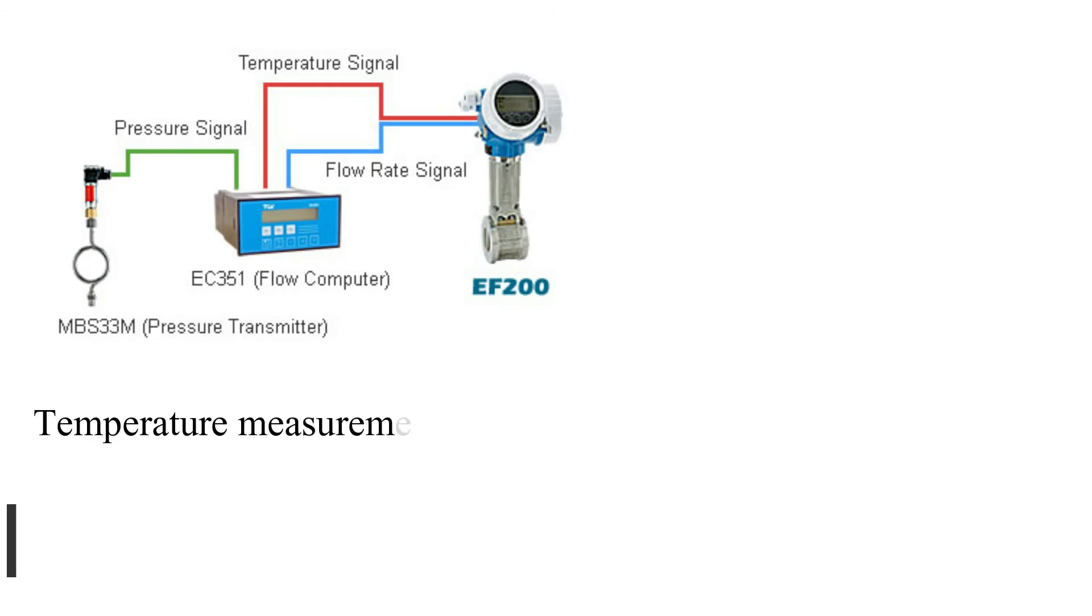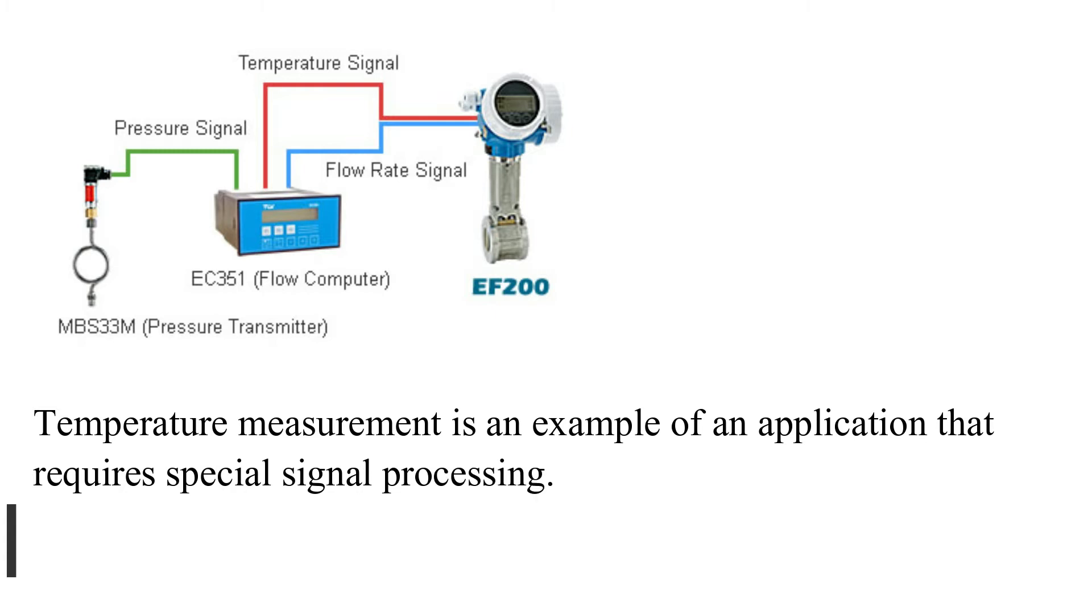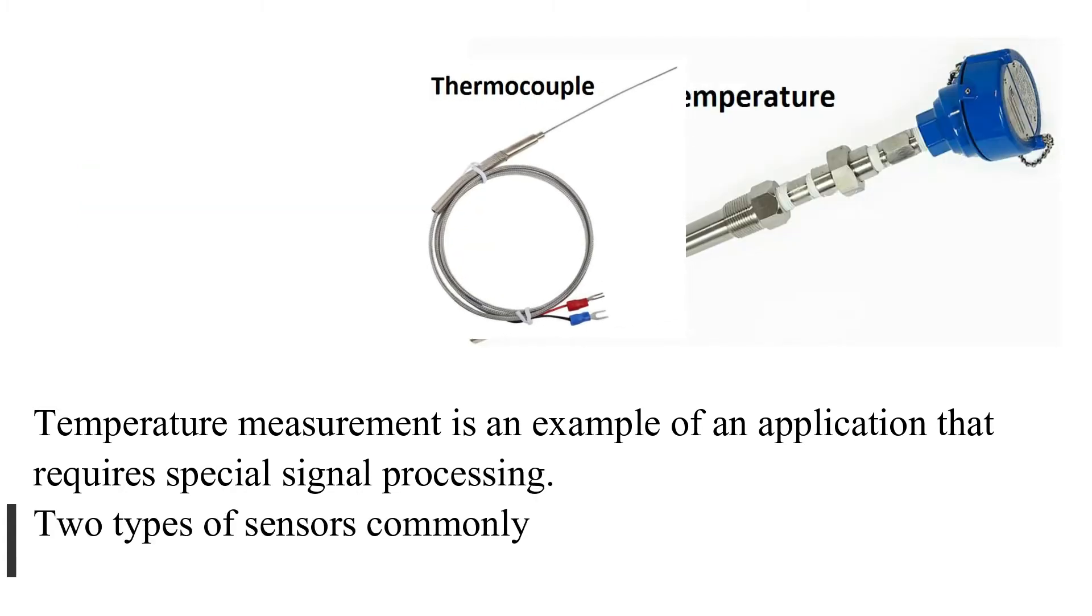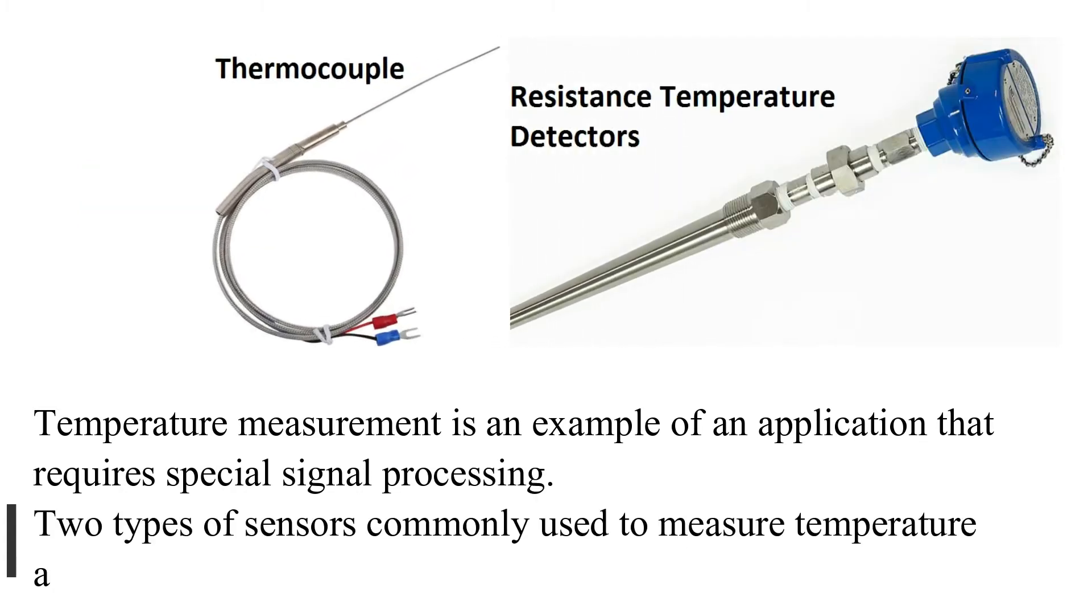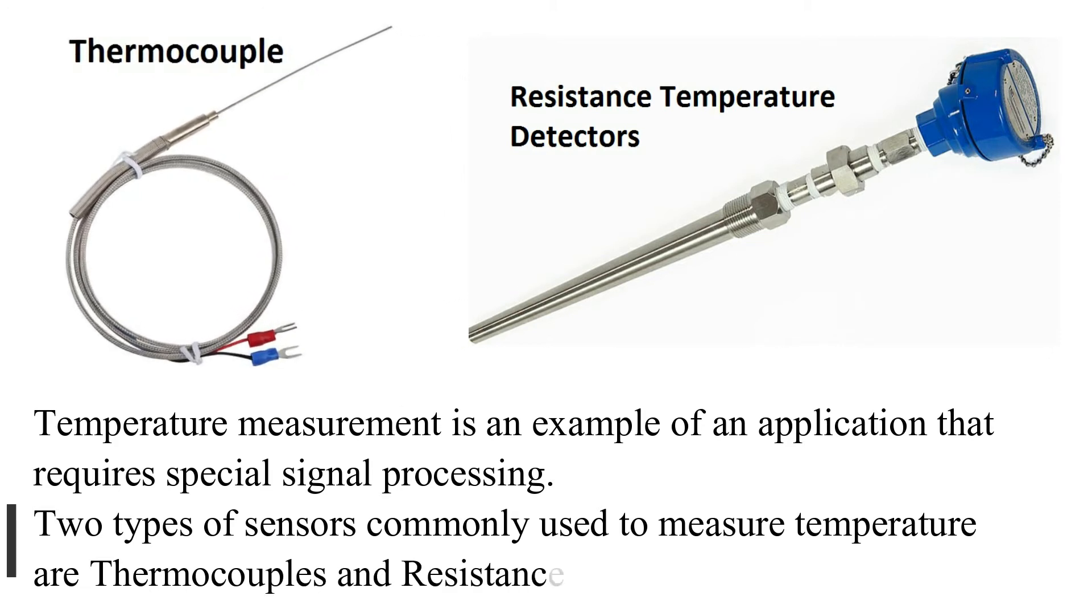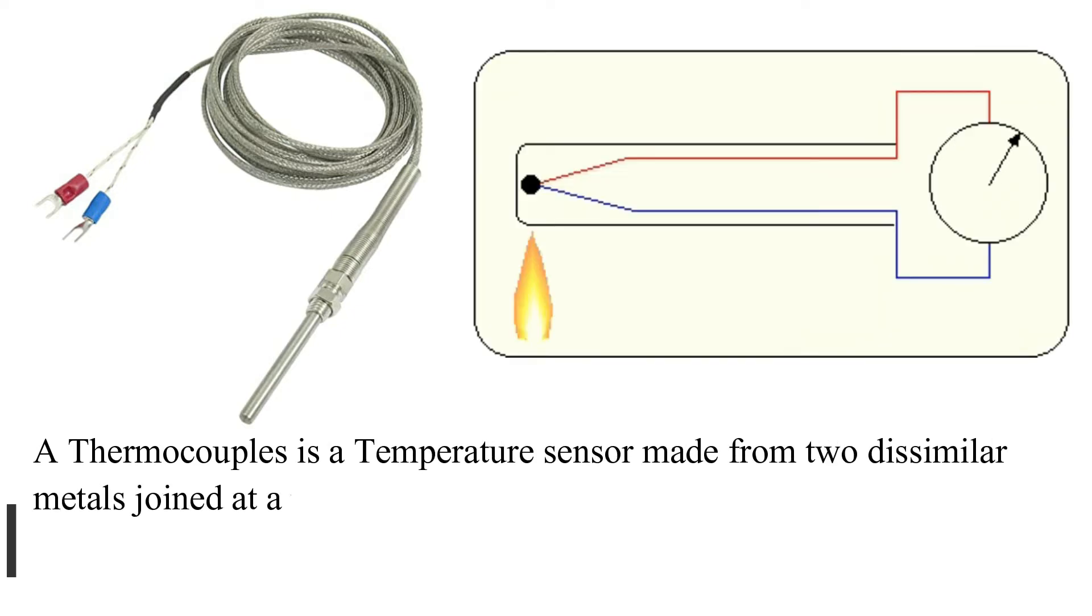Temperature measurement is an example of an application that requires special signal processing. Two types of sensors commonly used to measure temperature are thermocouples and resistance temperature detectors. A thermocouple is a temperature sensor made from two dissimilar metals joined at a point called a junction.